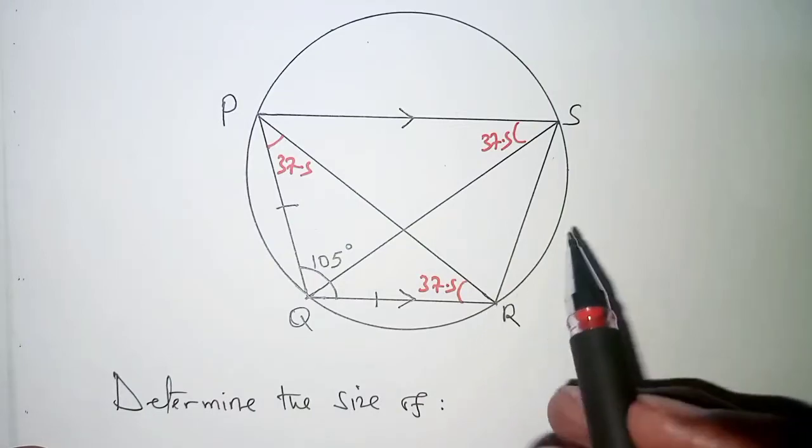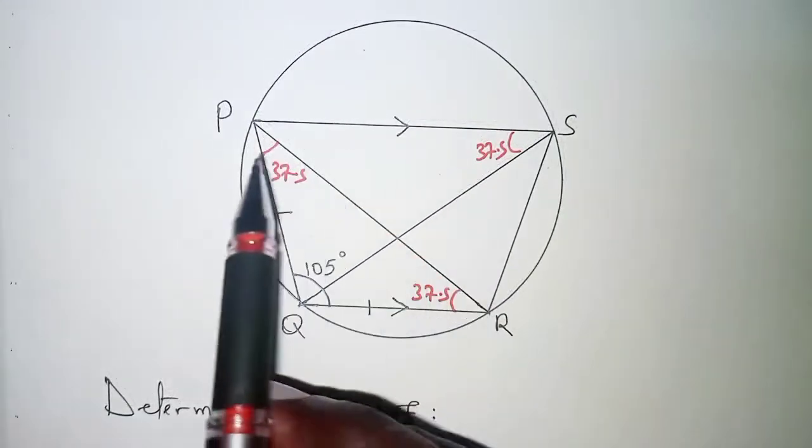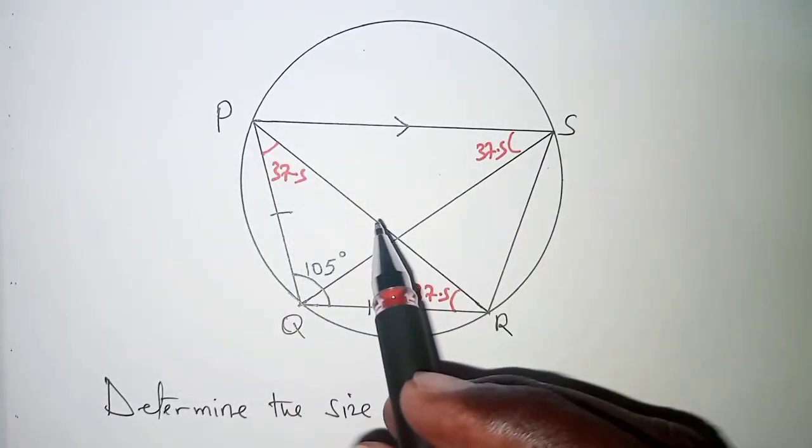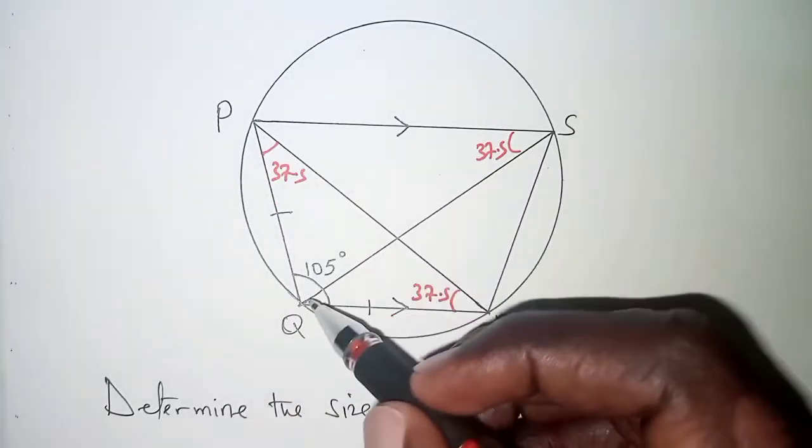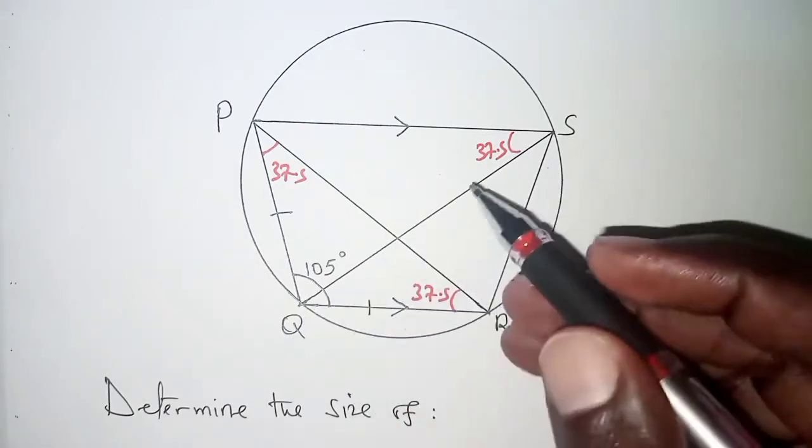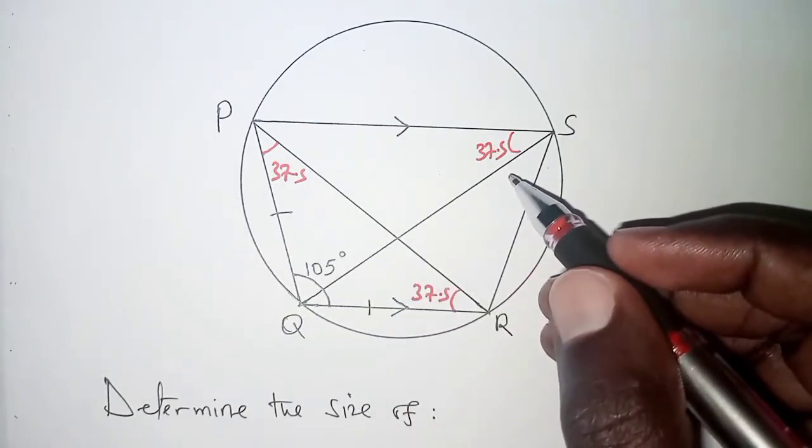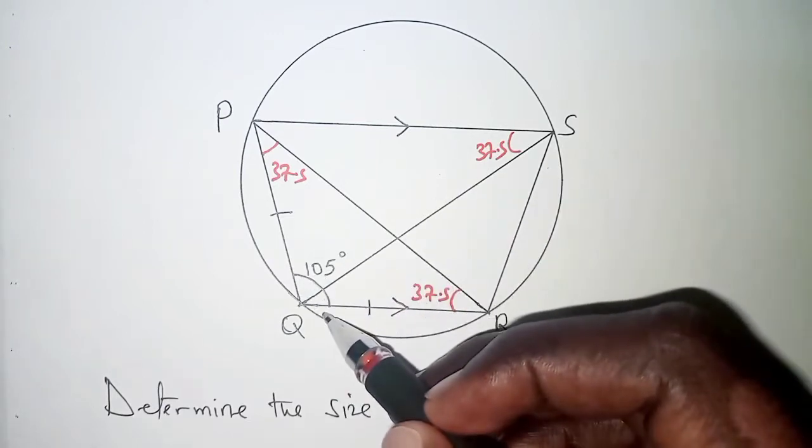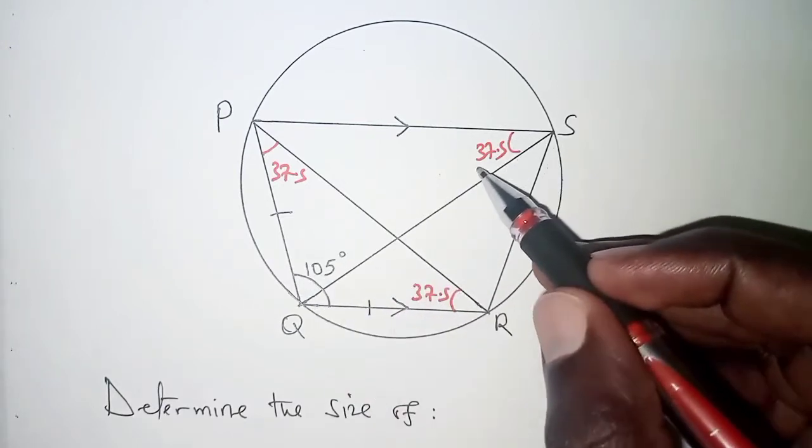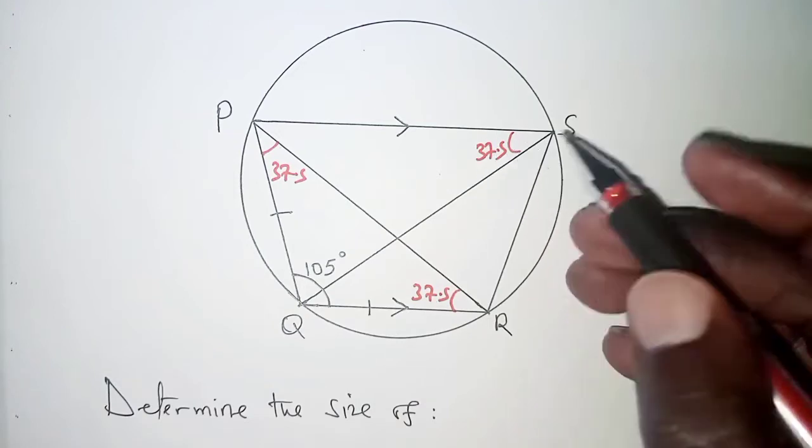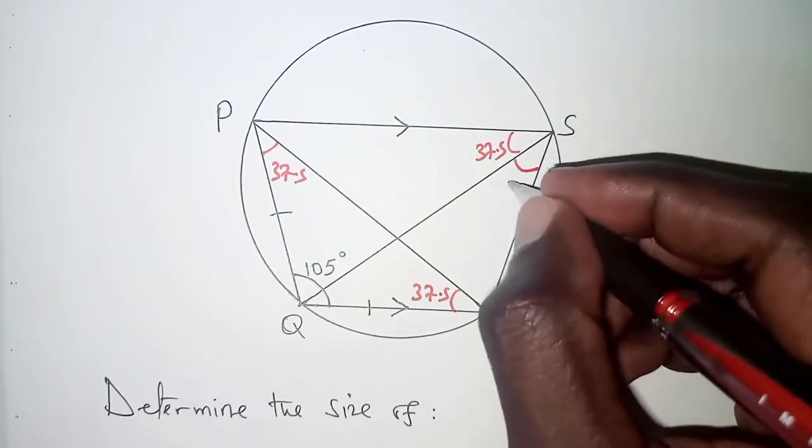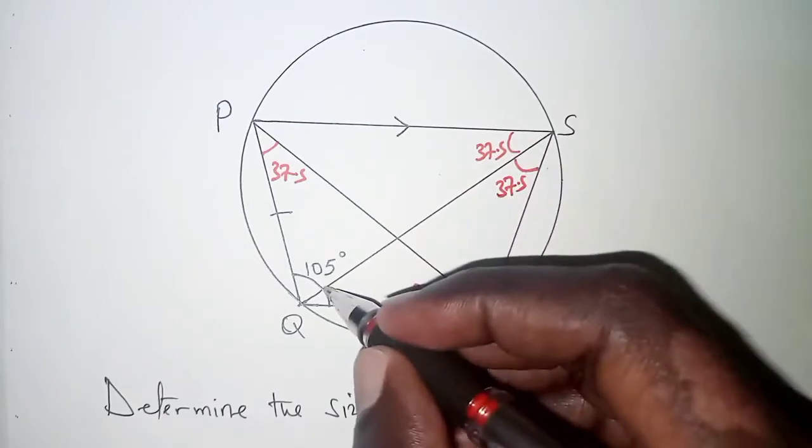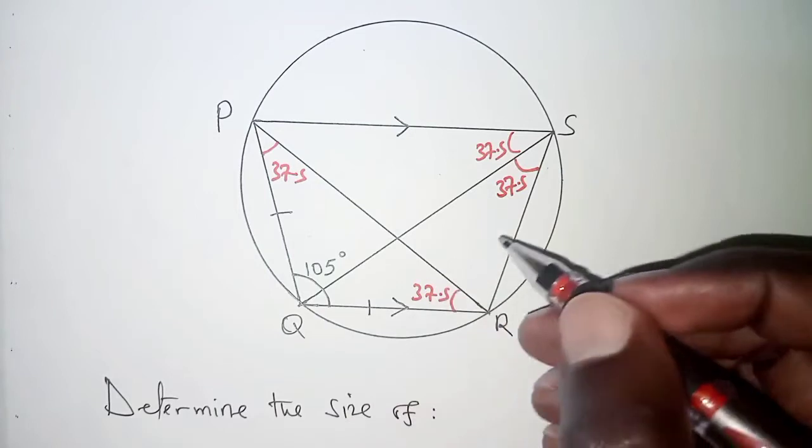The next thing we need to note here is we are told that PQRS is a cyclic quadrilateral and for a cyclic quadrilateral opposite angles add up to 180 degrees. So if we already have here as 105 and this angle here as 37.5 that means that this one here is also 37.5 so that we have 75 plus 105 giving us 180.